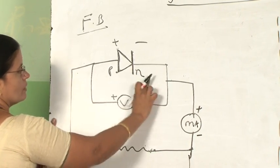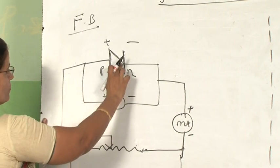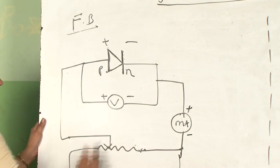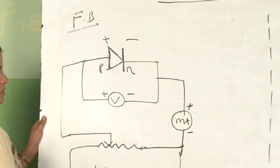So now P-N junction diode is given forward bias as you see from this diagram. P-section is connected to the positive terminal and N-section is connected to the negative terminal.